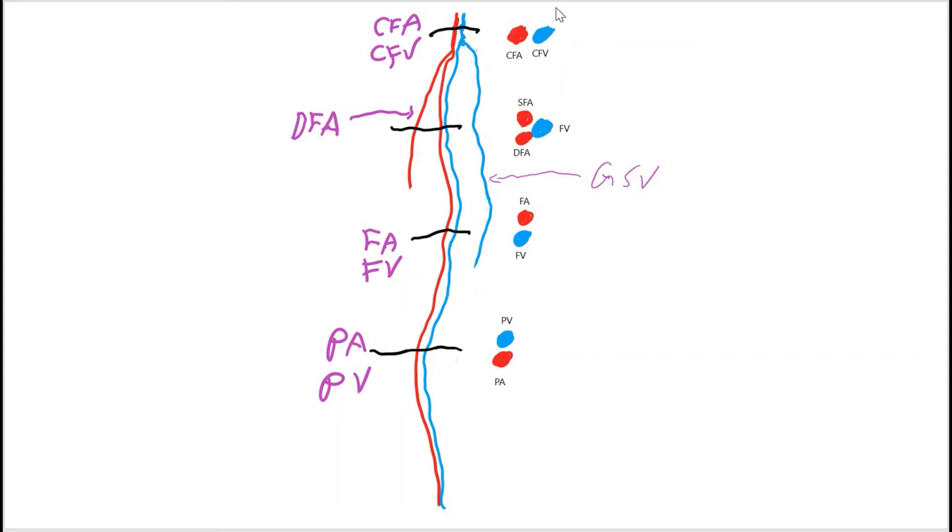On the right side we see what the vessel looks like on a cross section area on the ultrasound. Black is where the ultrasound beam is hitting. Here the red is artery and the blue is vein. So at this spot we have common femoral artery, common femoral vein, and you'll see two black circles on the echo.